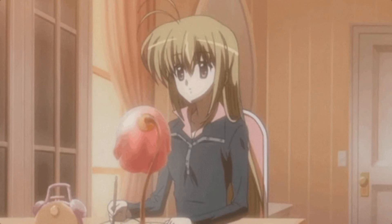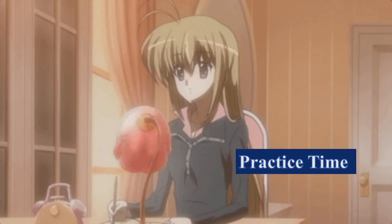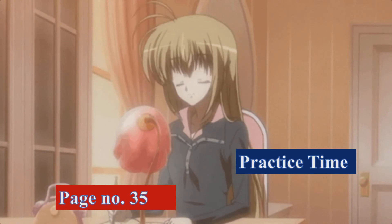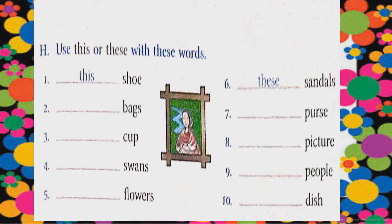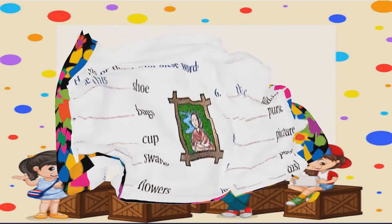After checking your knowledge, it's time to practice questions from your grammar book. Let's move to practice time and attempt the exercises on page number 35. Use 'this' or 'these' with these words. Students, जो singular दिखाई दे उसके लिए 'this' use करना है, and जो plural दिखाई दे उसके लिए 'these' use करना है. For example, 'shoe' is singular so we use 'this,' but 'sandals' is plural so we use 'these.' Fill in similarly.